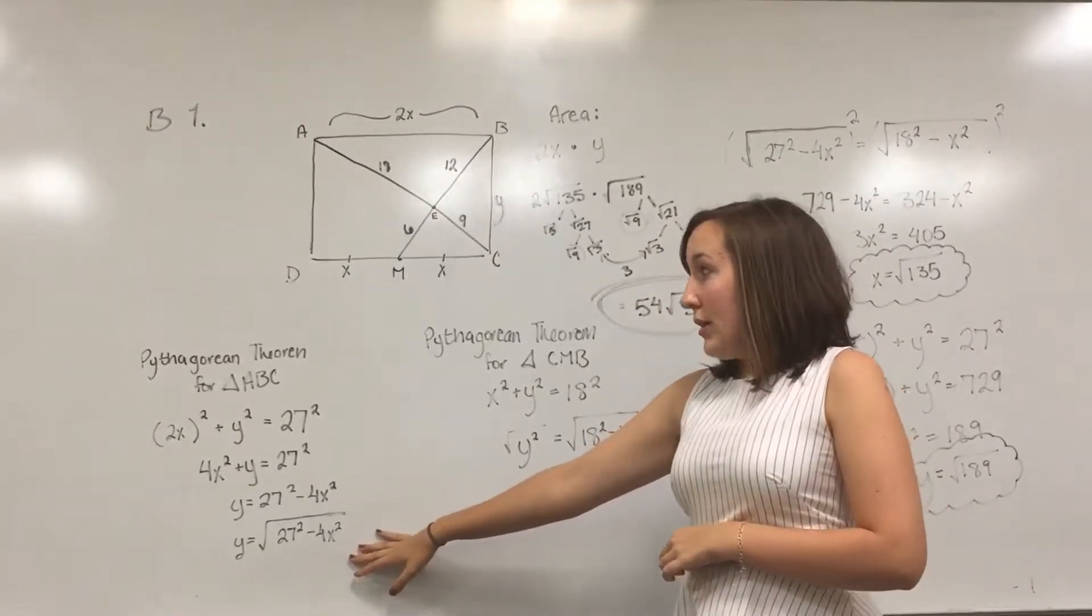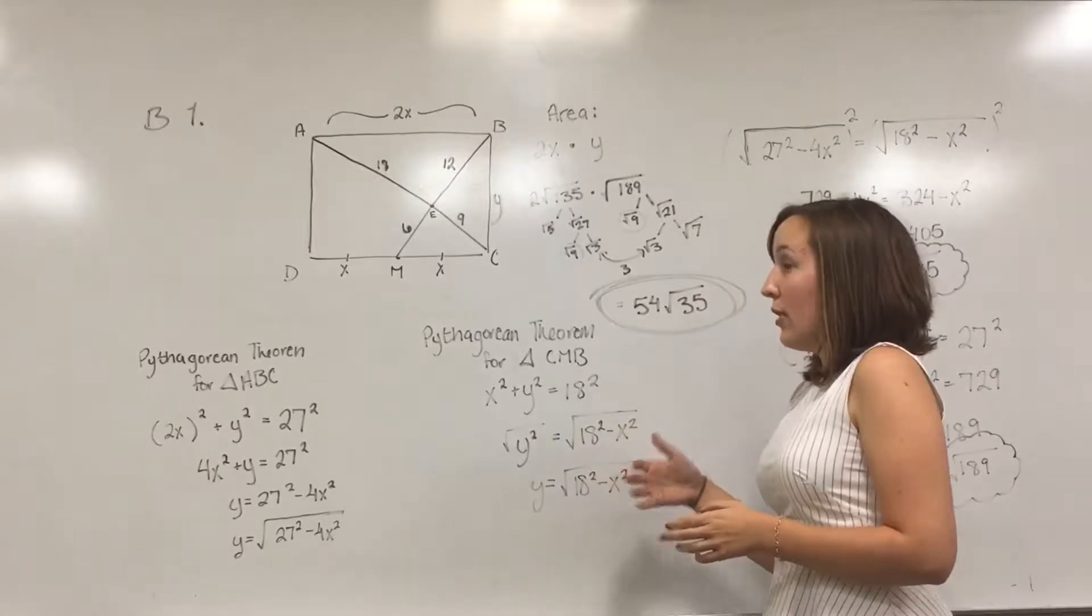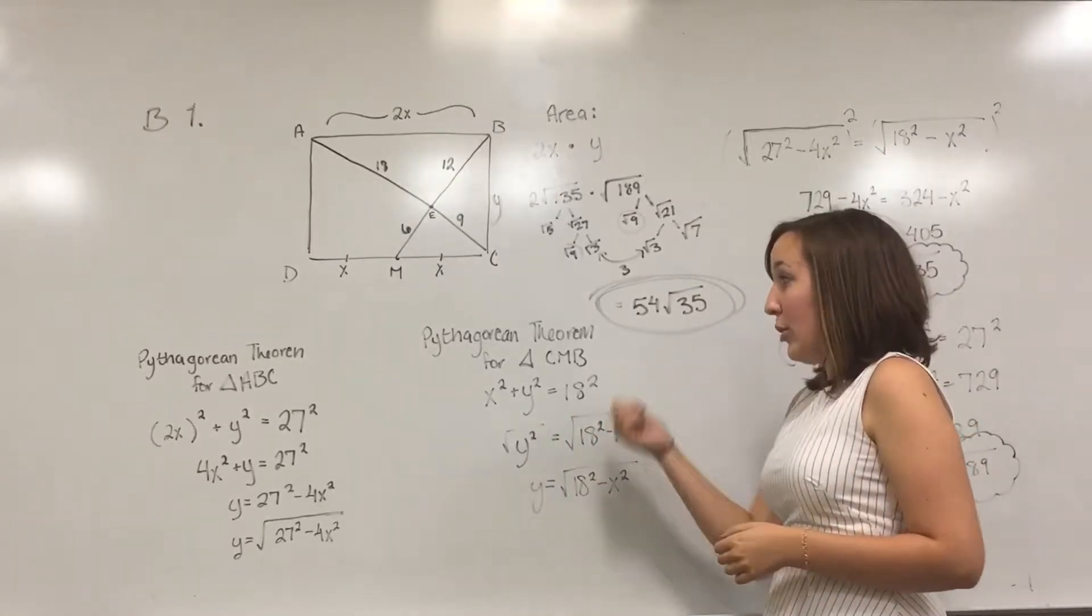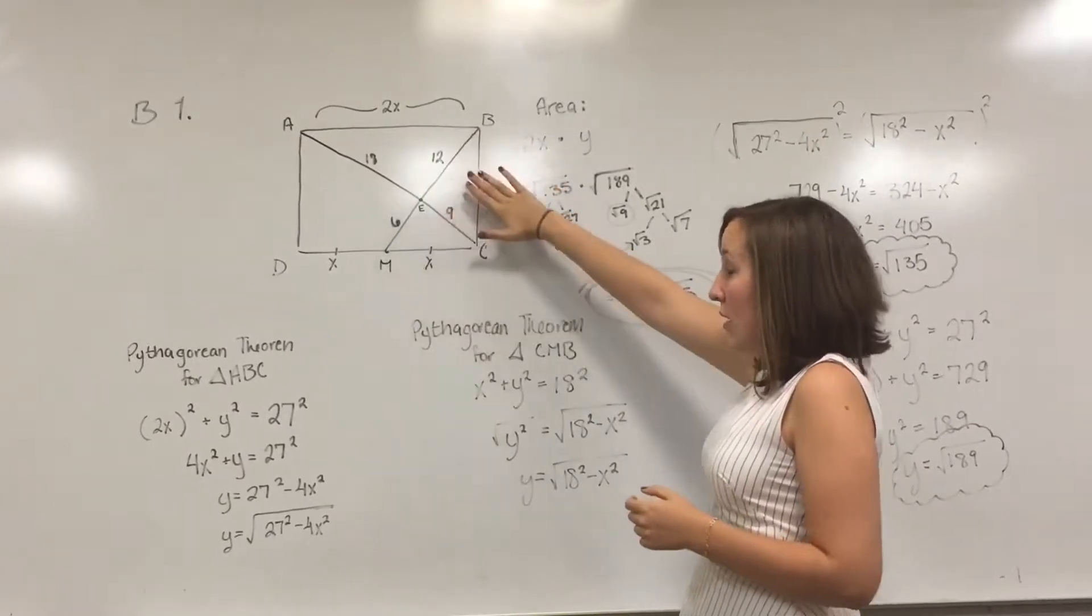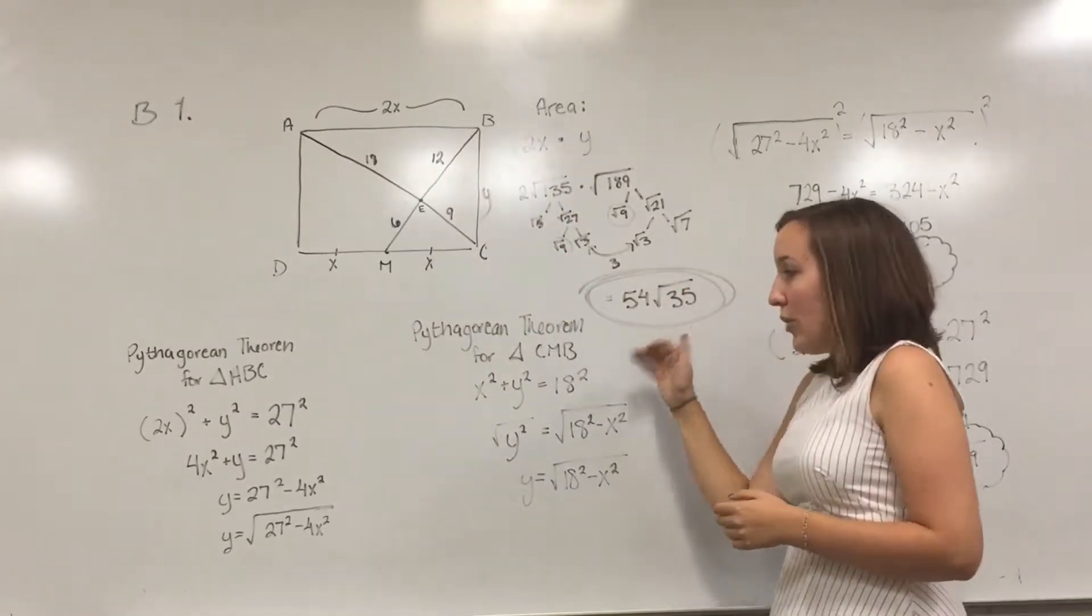And then you can do Pythagorean theorem for the other triangle in here. I labeled it CMB, so it's CMB, it's this one here. So again, do Pythagorean theorem.